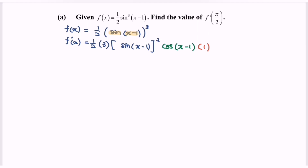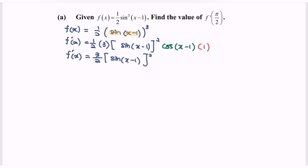Next, rewrite the situation. f'(x) equals 3 over 2, multiplied with sine(x minus 1) squared, then cos(x minus 1).